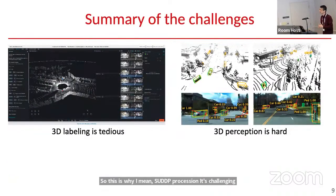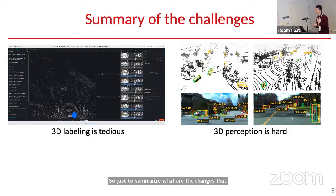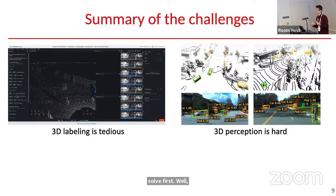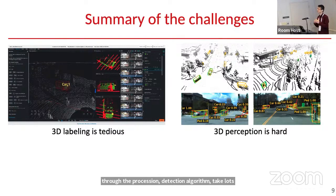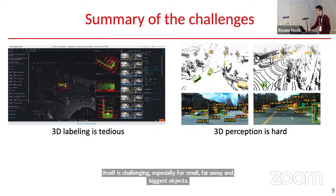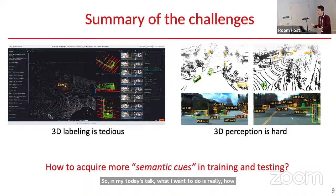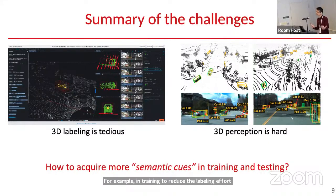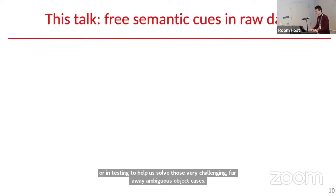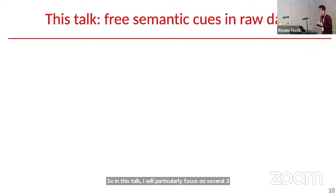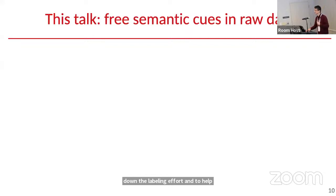To summarize the challenges: first, labeling 3D data for training 3D perception detection algorithms takes a lot of time. Second, even with a trained model, 3D perception itself is challenging, especially for small, far-away, and ambiguous objects. In today's talk, I want to explore how we can acquire more semantic cues — for example in training to reduce labeling effort, or in testing to help solve those challenging far-away and ambiguous object cases.